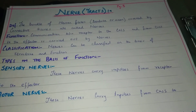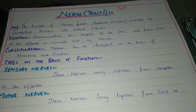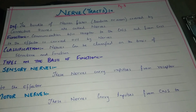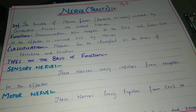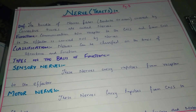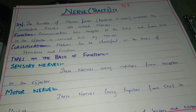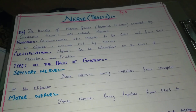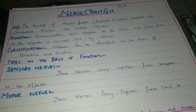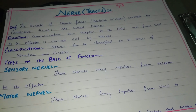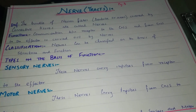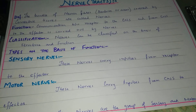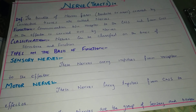The bundle of neuron fibers covered by connective tissue are called nerves — this is very important from an MCQ point of view. The function of a nerve is to connect the central nervous system with the body and the body with the central nervous system. For example, receptors collect information, these nerves carry impulses to the central nervous system, and commands come from the central nervous system to the effector. Nerves are divided on the basis of function.